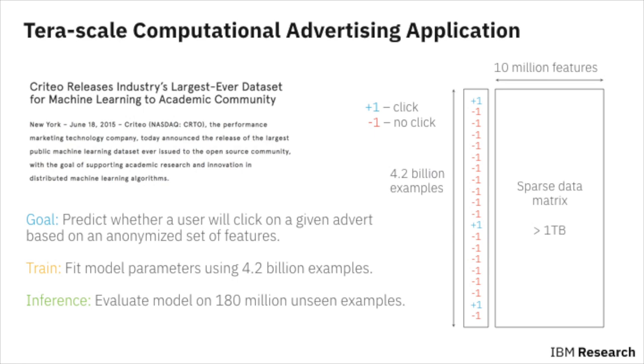The dataset consists of a portion of Criteo's traffic over a period of 24 days, and every day over 160 million training examples were collected, so the whole dataset consists of over 4 billion labeled examples where a label indicates whether a user clicked on an ad or not. The machine learning task is to predict whether a user clicks or does not click on a particular ad.